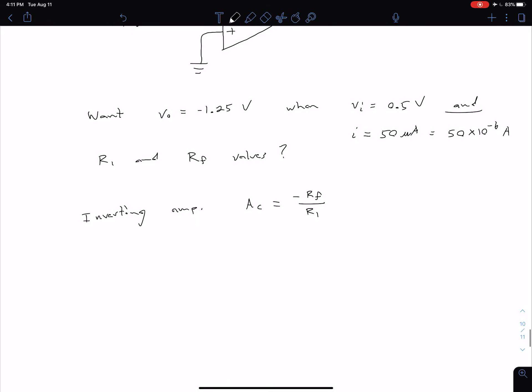Well, in this case, we know that our desired gain, we can get that from our input and output conditions because our closed-loop gain AC is also equal to, in general, V out divided by VI.